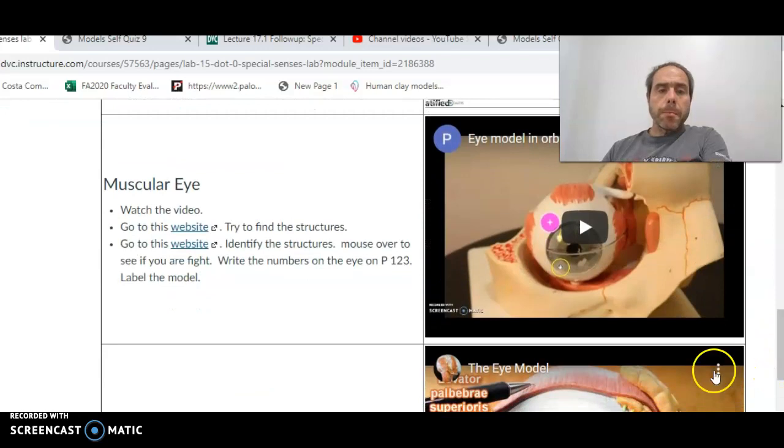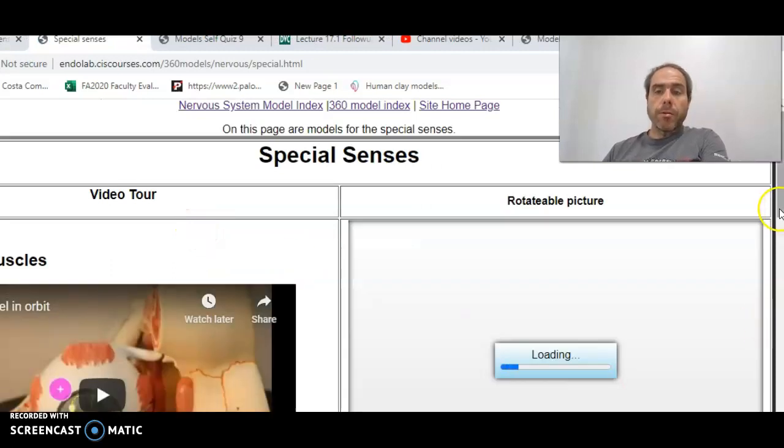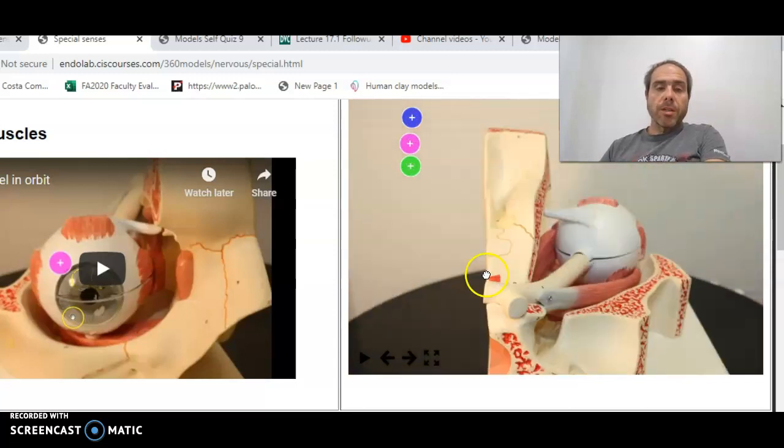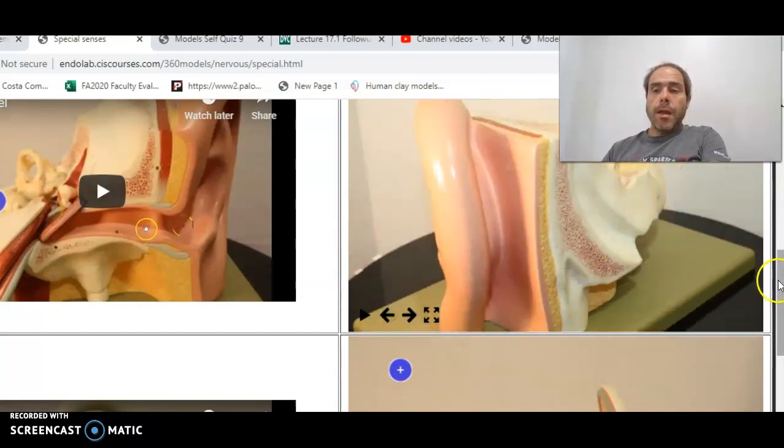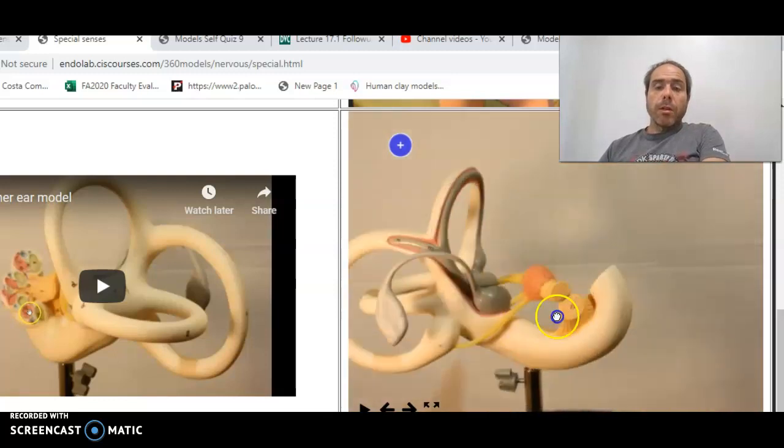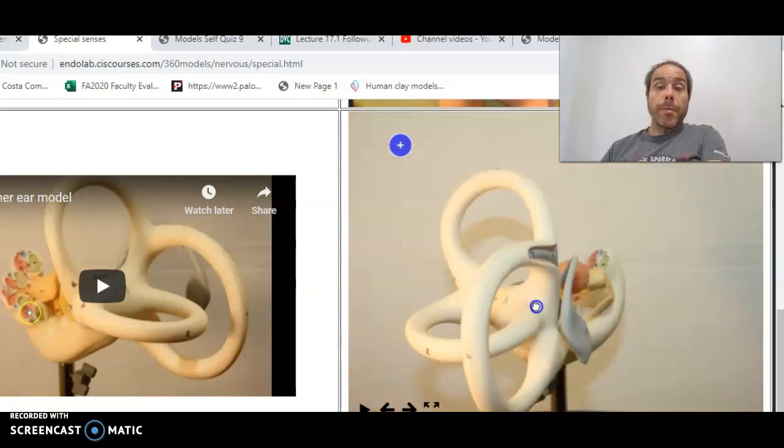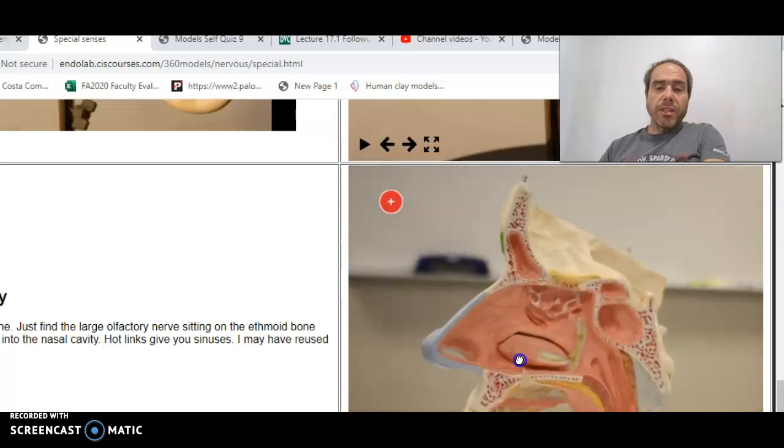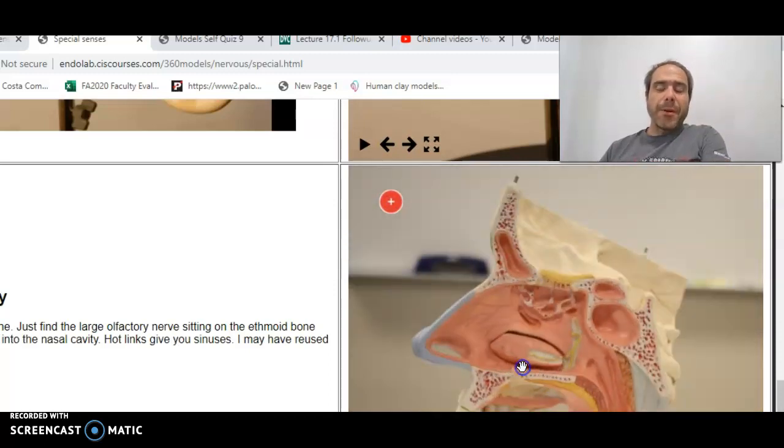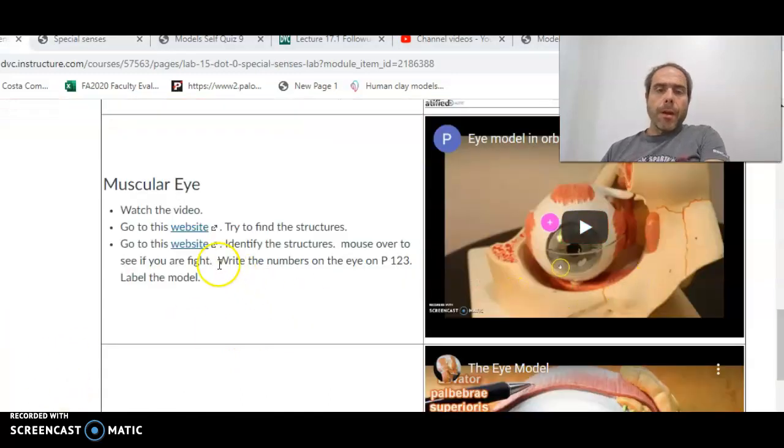Then you're going to look at models. So watch my videos for the models. This one's mine. This one looks like it is Jonathan's. Then go to this website, find the structures, go to this website, and mouse over. So here is the rotating eye and we have the rotating ear as well. So find the structures. There's my video. You'll be here for the ear also. So there's the ear model. And we actually have the cochlea and semicircular canals. This is actually a humongous model right here. So look at those as well. And we also have the nasal cavity one. Yes, you've actually seen this before. It's the exact same one for the bones. I just put it on another page.